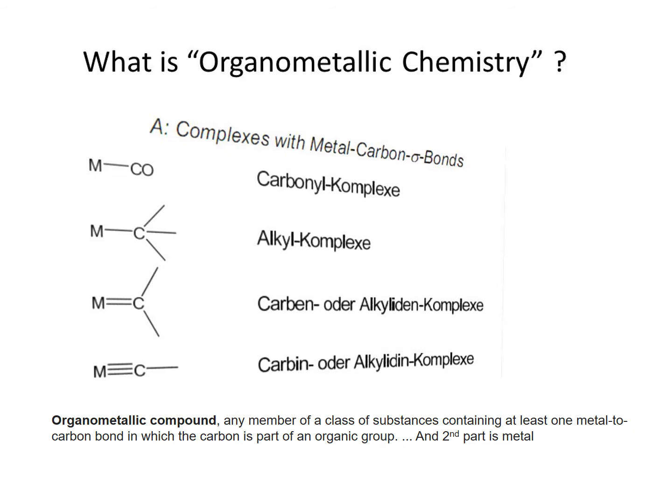So here is a question: what is organometallic chemistry? To understand organometallic chemistry, first of all, what are organometallic compounds? As it is obvious from the name, there are two parts. The first part is Organic and the second part is Metal. The metal can be from the main group elements, transition elements, f-block elements, or it could be a metalloid.